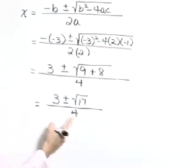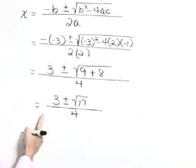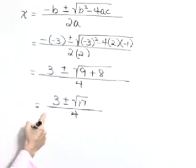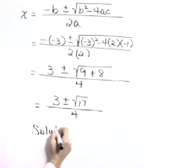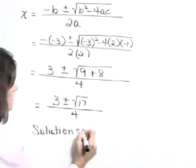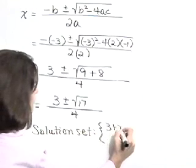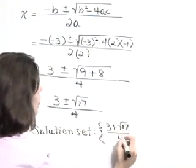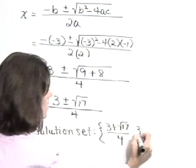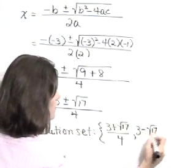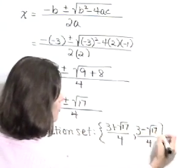It's always wise to check both of these solutions in the original equation. And that check does verify that the solution set is 3 plus the square root of 17 over 4, and 3 minus the square root of 17 all over 4.